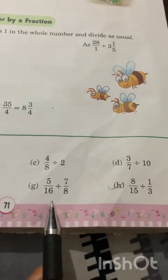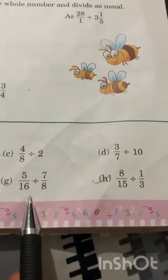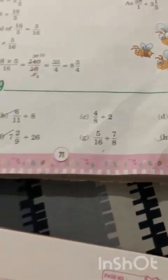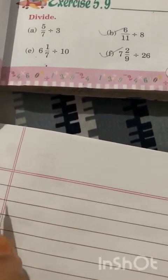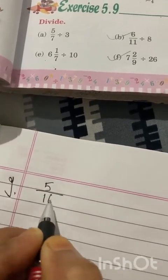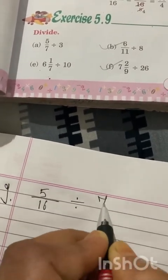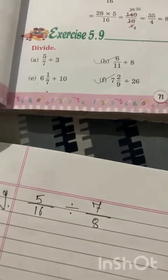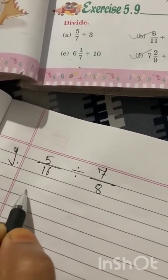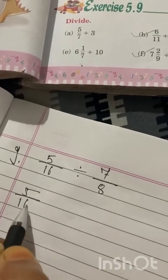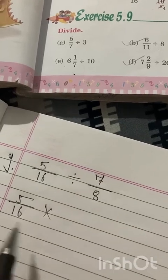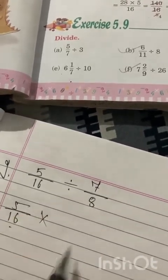Now we come to question number G — division of a fraction by a fraction. Just have a look: 5/16 divided by 7/8. We will convert this into multiplication and divide by the reciprocal.